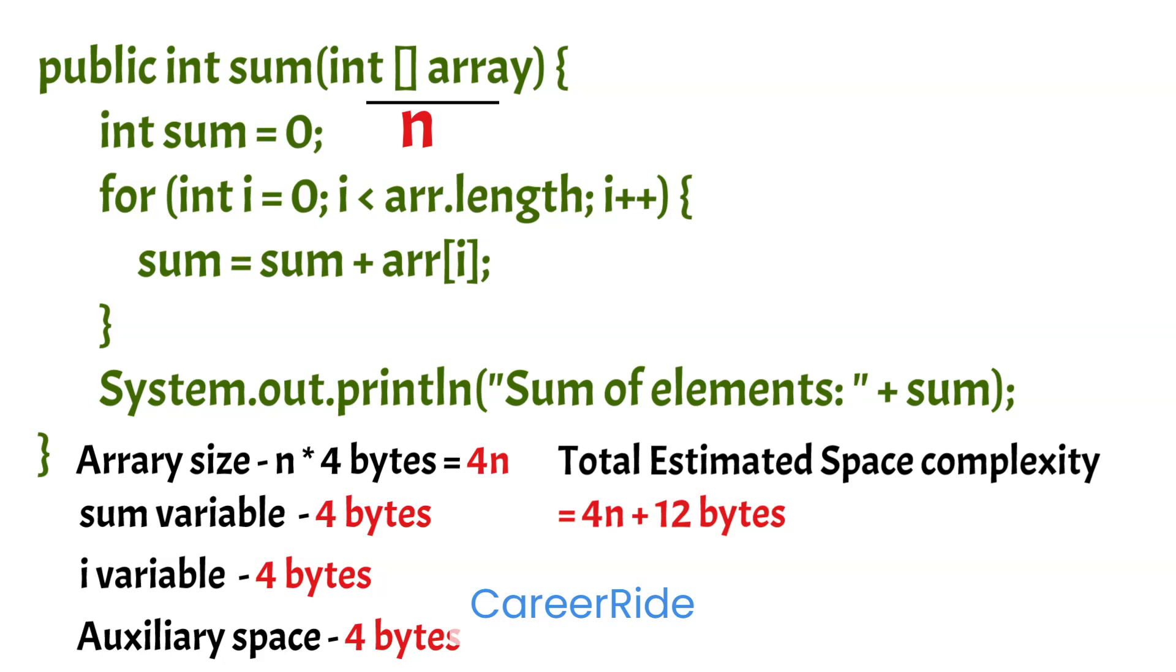So here you can see the space complexity keeps changing depending on the size of array we pass. Now in big O term we leave all constant parts. So we are left with n and can be expressed as O of n.